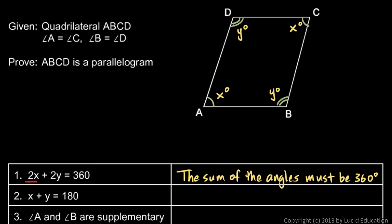Step 2: all I have to do to get from step 1 to step 2 is take that equation and divide both sides by 2. So x plus y is 180, because of division — the division property of equality, which just means we divide both sides by the same thing. If step 1 is true, then step 2 must be true.